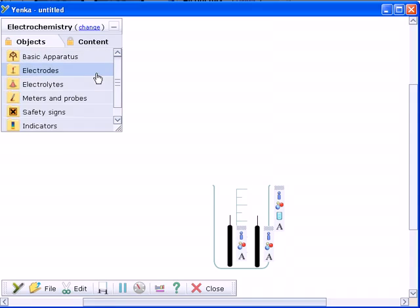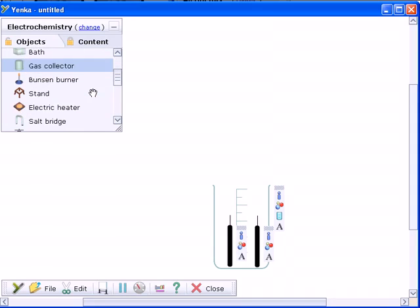Choose from a range of metal or carbon electrodes and combine them with one of 28 different electrolytes.